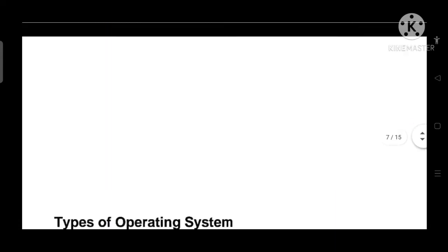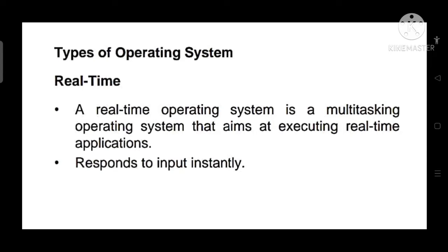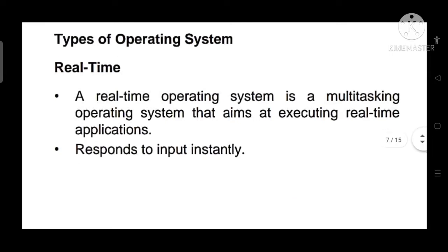Sabse pehle hum dekhte hain Real-time operating system. So it is a multi-tasking operating system that aims at executing real-time applications and it responds to input instantly. Real-time operating system kya karta hai — yeh multi-tasking operating system hota hai. Multi-tasking matlab ismein aap bahut saare tasks kar sakte ho — game bhi khel sakte ho, painting bhi bana sakte ho, typing bhi kar sakte ho, music bhi sun sakte ho, video bhi dekh sakte ho. Aur iska advantage yeh hai ki jaise hi aapne input diya, yeh microseconds mein aapko output provide kar dega. Toh yeh bahut quick aur fast hota hai.